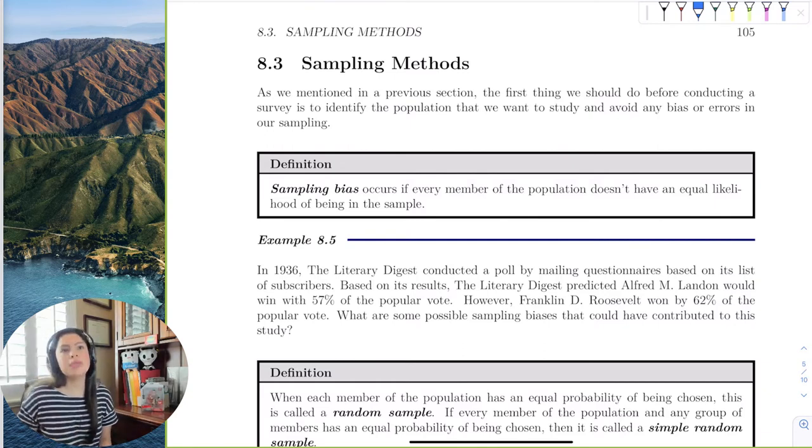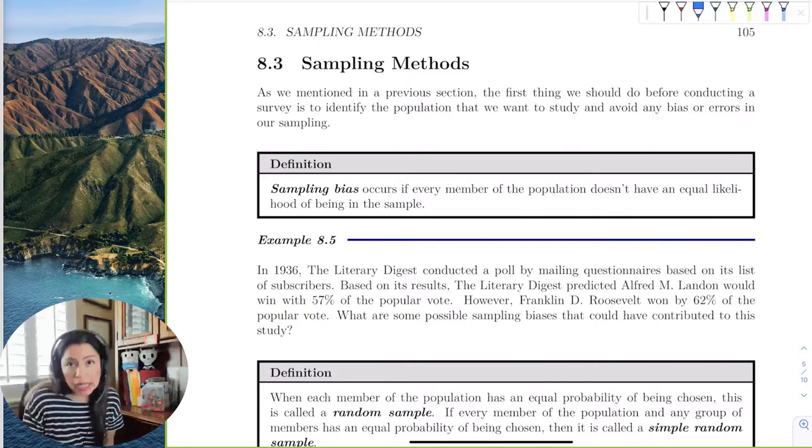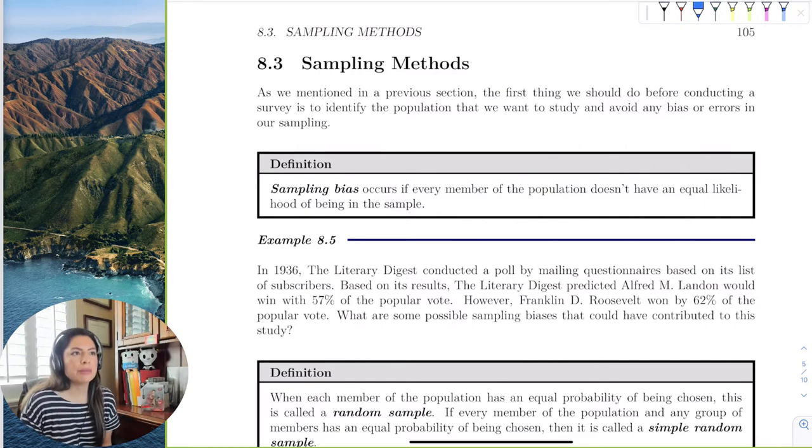Well, there are several sampling methods that can be meaningful to your study and give you great results, but the first thing we need to talk about is sampling bias.